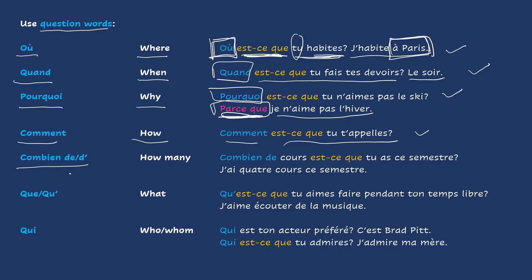Or combien de — and then you would add a noun. Combien de? That means how many. For example, combien de cours — how many classes? Combien de cours est-ce que tu as ce semestre? How many classes do you take this semester? J'ai quatre cours. I take four classes.